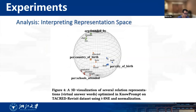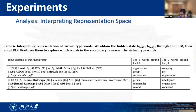We further conduct analysis to explore what precisely the optimized virtual answer words and type words are. We use T-SNE and normalization to map the embeddings to three-dimensional space and make a 3D visualization of several sample virtual answer words in the TACRED dataset. Our proposed virtual answer words are similar to prototypical representations for relation labels. We observe that due to the synergistic optimization with knowledge constraints, those learned virtual type words can dynamically adjust according to the context and play a role in relation extraction.